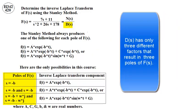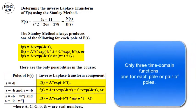To summarize, the denominator has only three different factors that result in three different poles. Only three time-domain functions can occur, one for each pole or pair of poles.